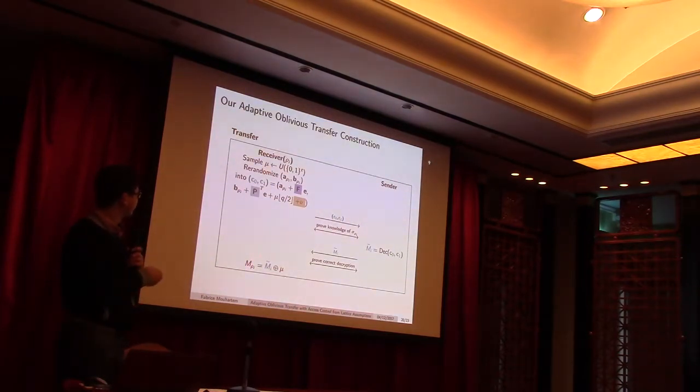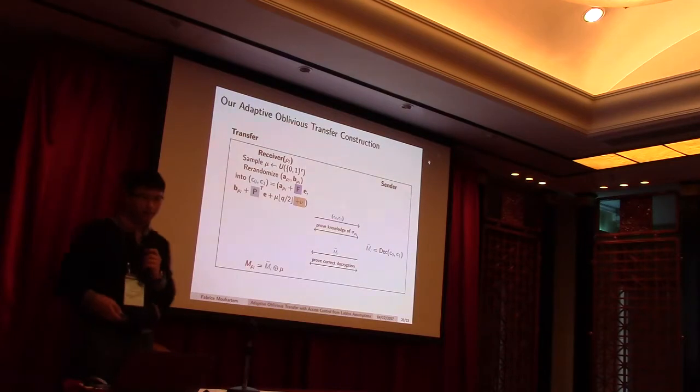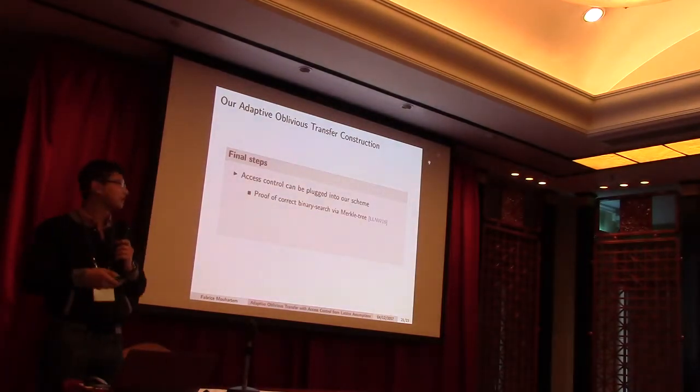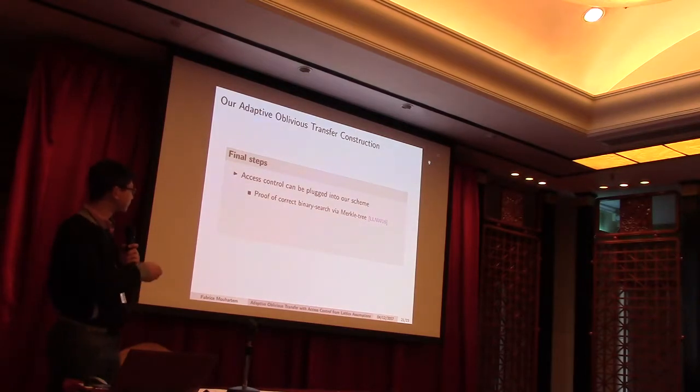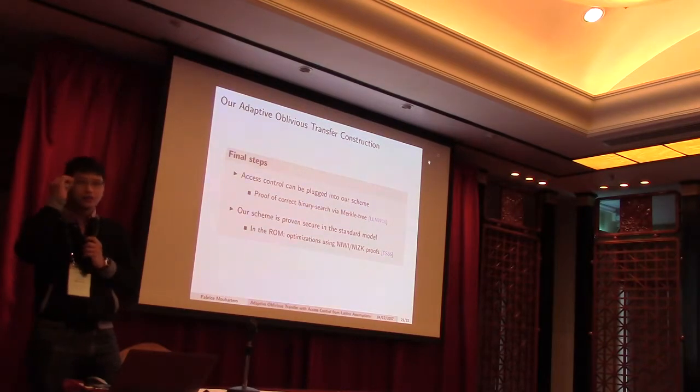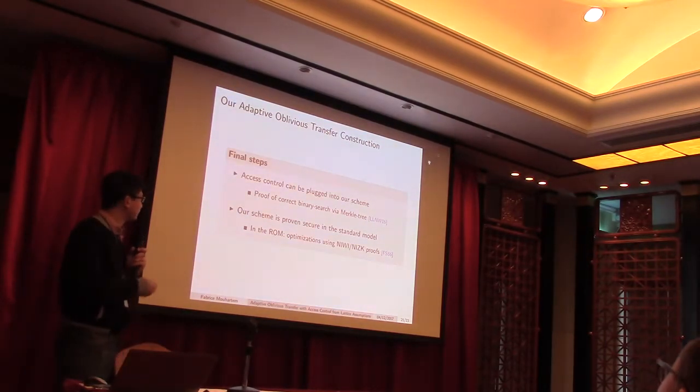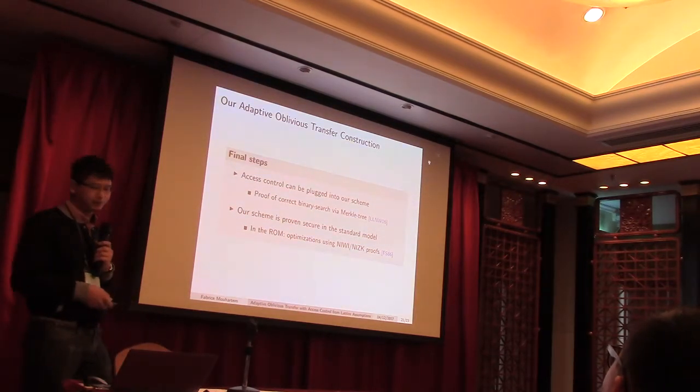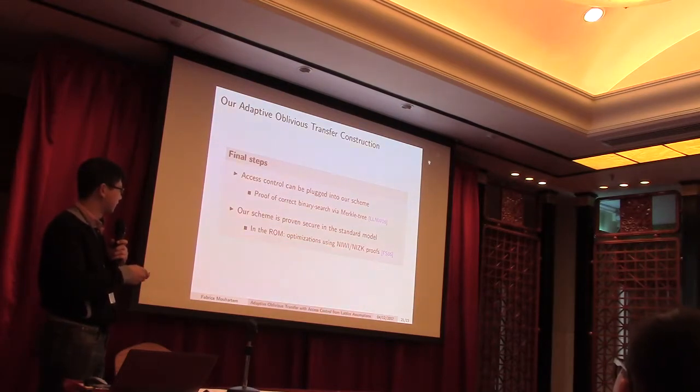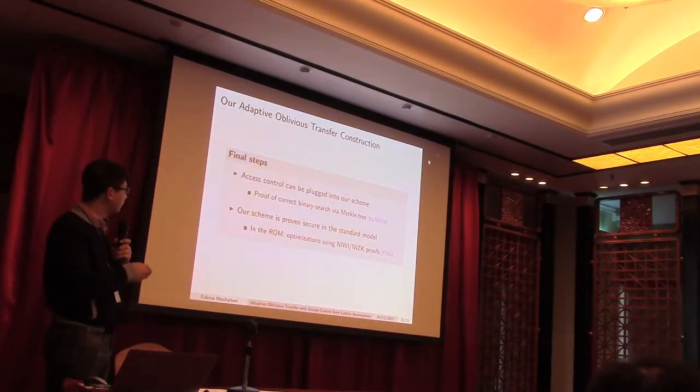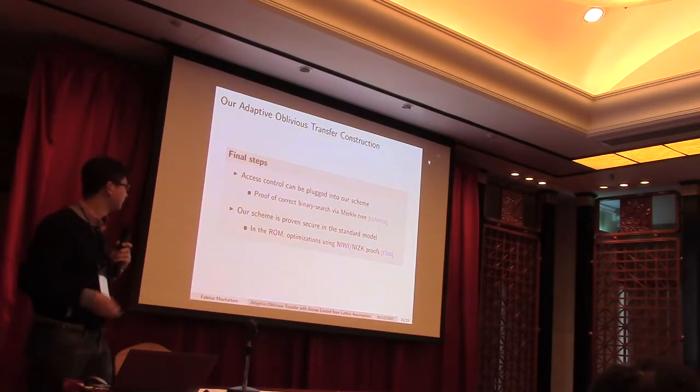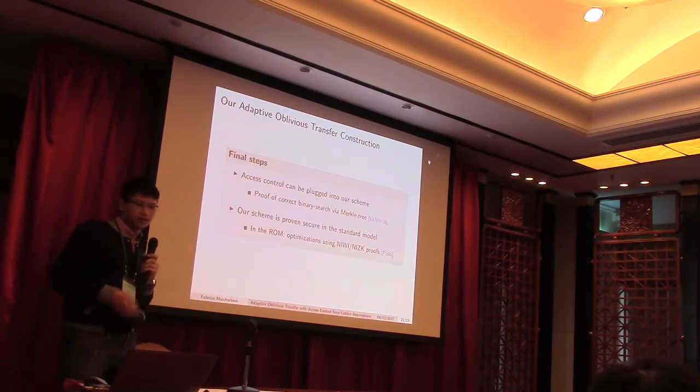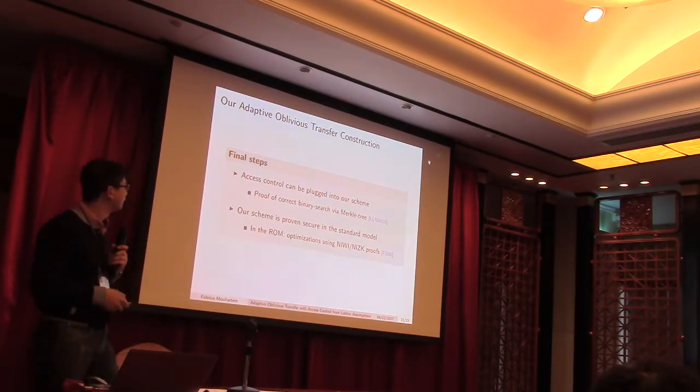And then, the receiver gets the message it wants. So, I didn't talk about access control, but it can be easily plugged into the scheme using techniques that I presented before. And also another improvement that can be done is to earn a little bit on the communication cost using Fiat-Shamir transform to optimize, to use non-interactive zero-knowledge proof instead of interactive proofs, and win on the communication proofs and the round number of rounds.